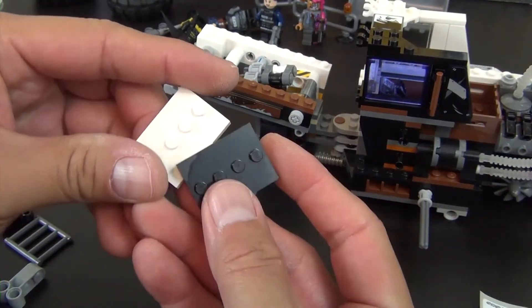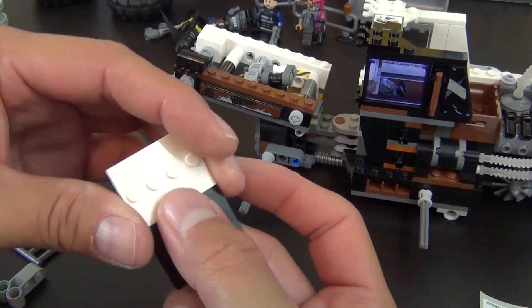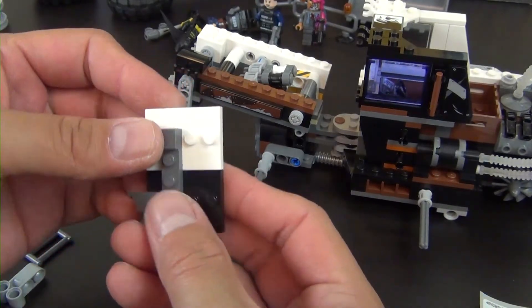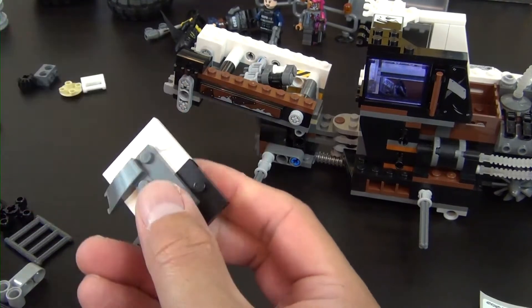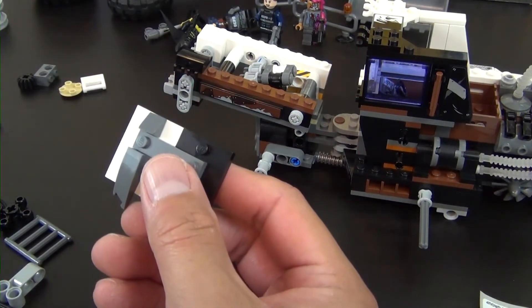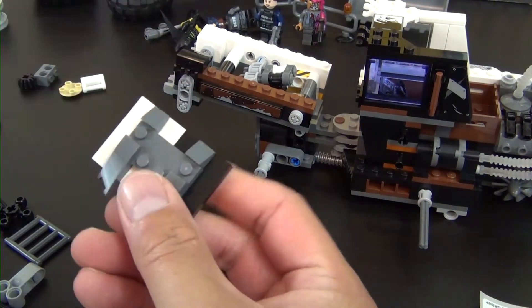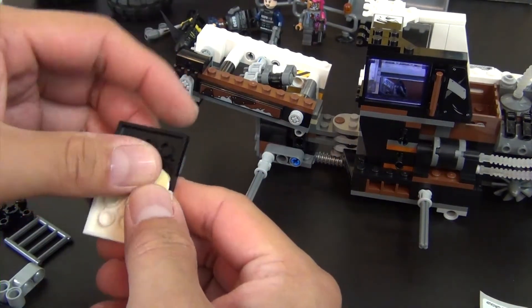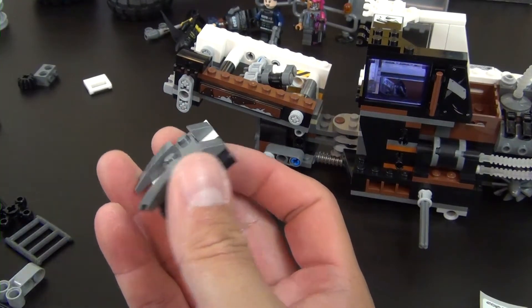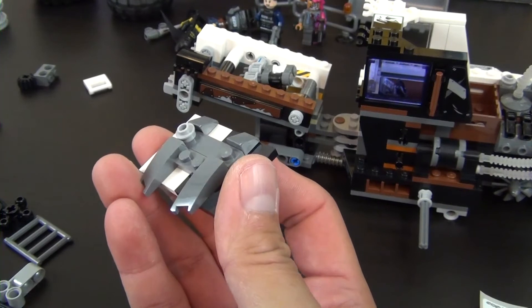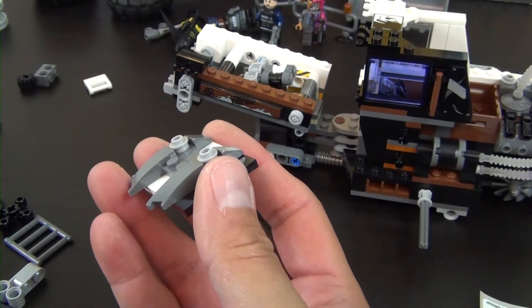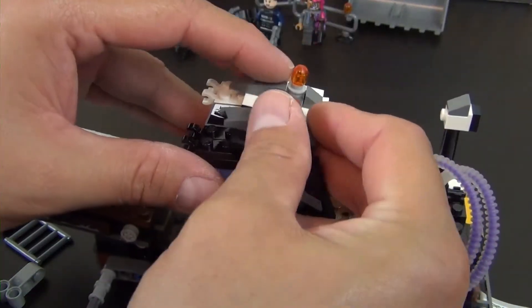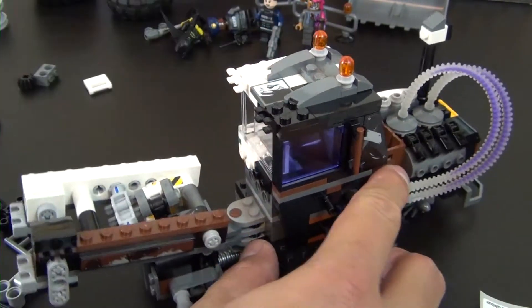Now we have these two little minifigure stands, one in white, one in black. A little assortment of pieces there. Turn this over - two tan anti-tiles and two hollow studs. And on top of those hollow studs we'll put these light pieces, and that will finish off the top of the excavator.